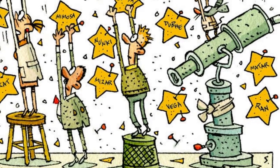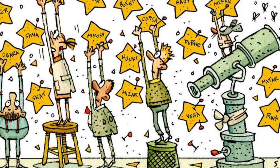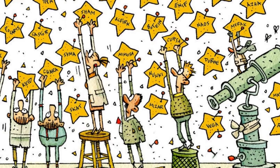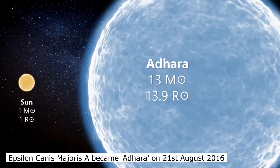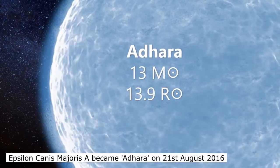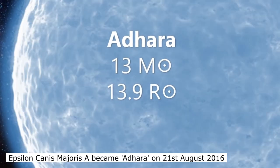In 2016, the International Astronomical Union organized a working group on star names to catalogue and standardize proper names for stars. That group decided that individual stars should have names rather than entire star systems. What this meant is that on the 21st of August 2016, the name Adhara was approved for the star formerly known as Epsilon Canis Majoris A.